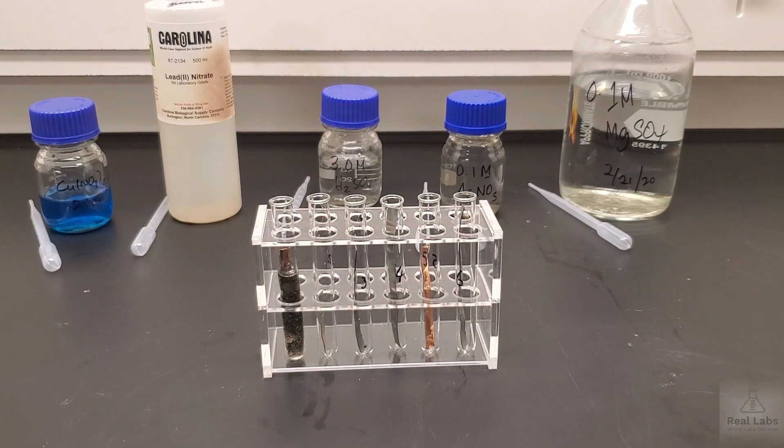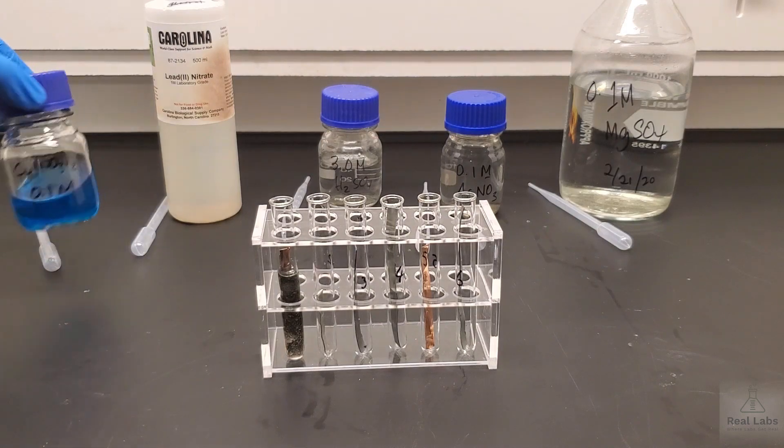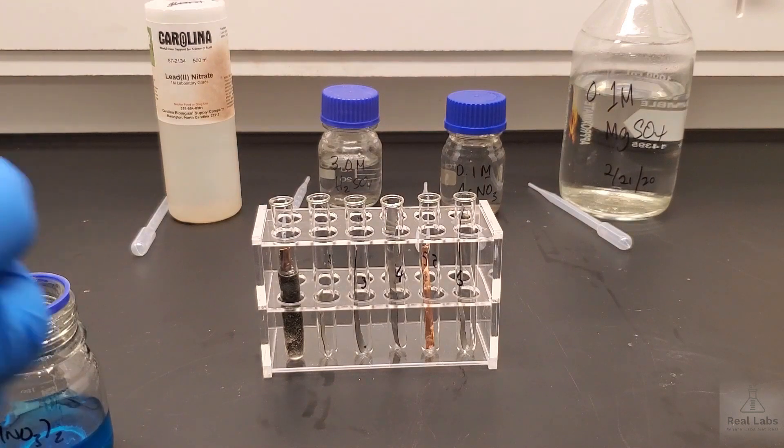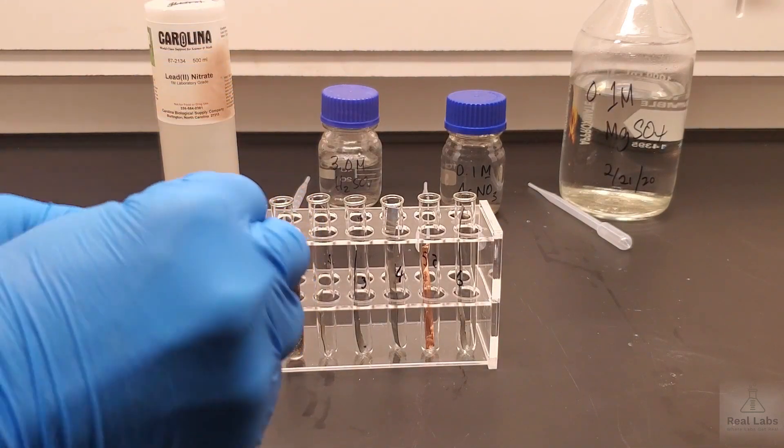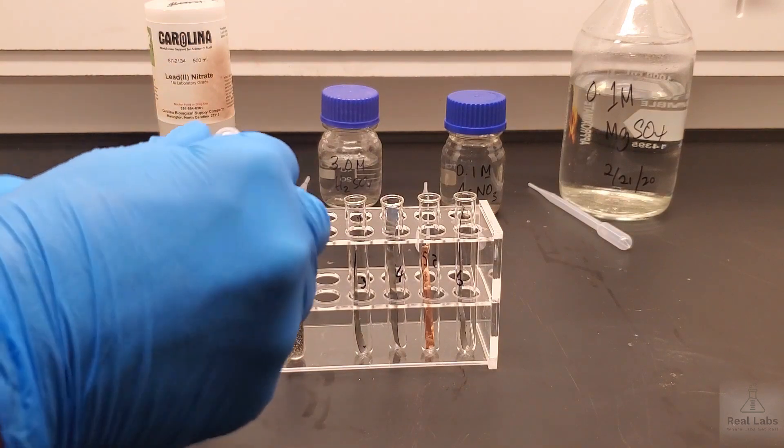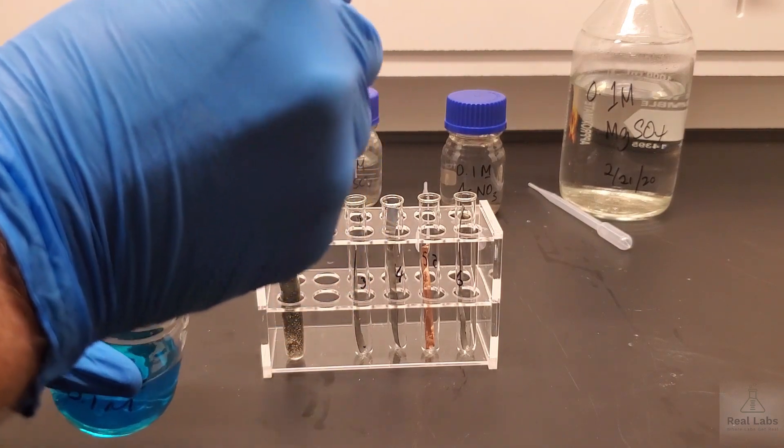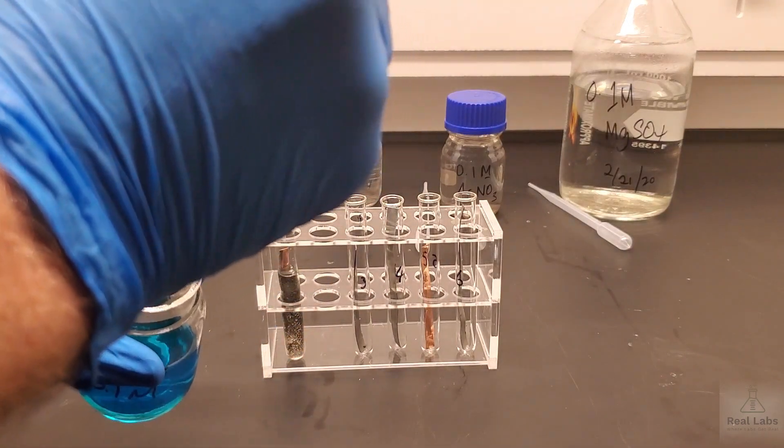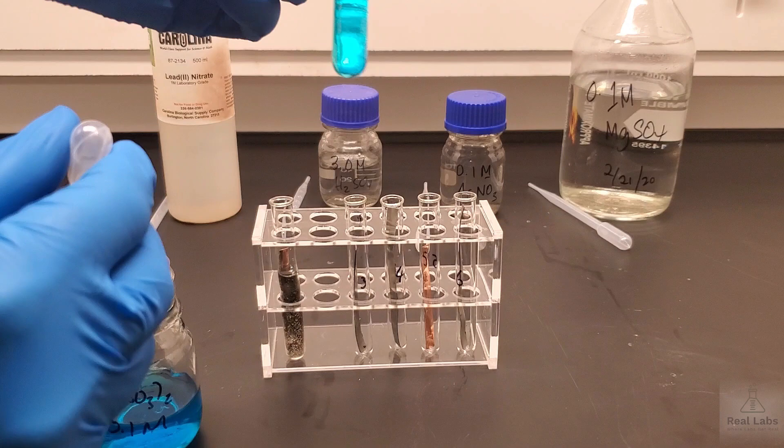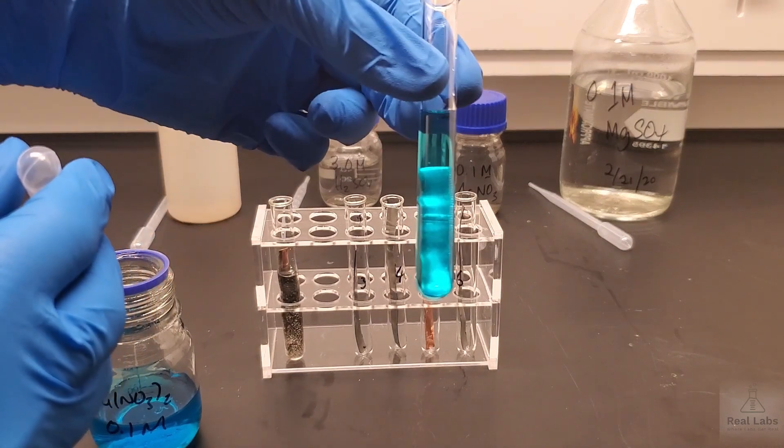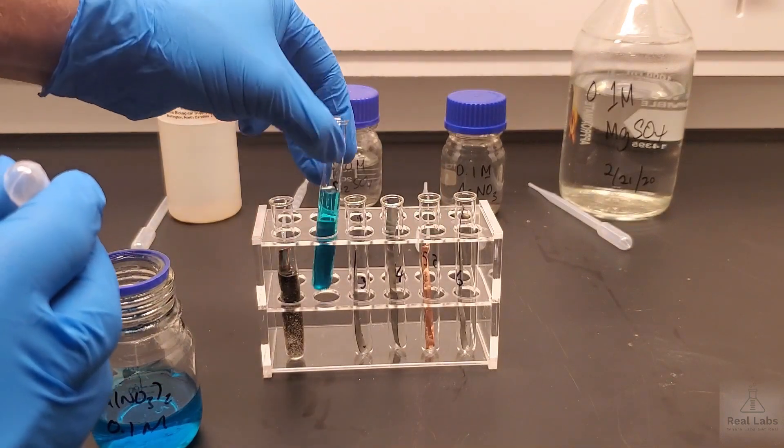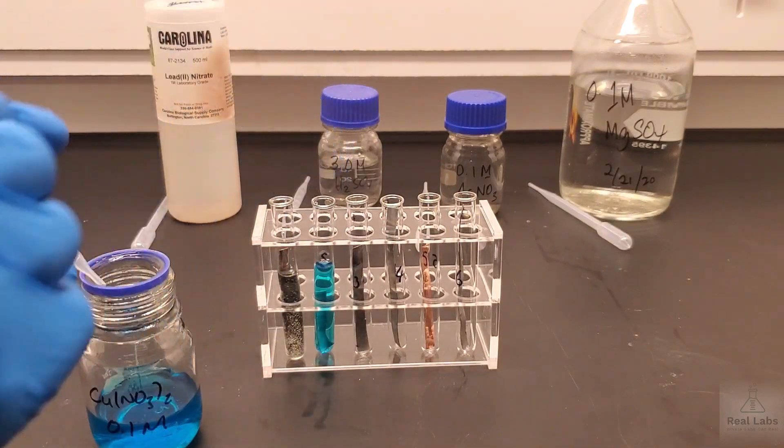In the second one where we have the lead strip, we're going to add the copper nitrate. We have our lead strip in there. We're going to fill it about halfway with this material. We can watch and see if anything happens to that. So far, it's still looking somewhat shiny in there. It doesn't look like initially anything substantial happened.